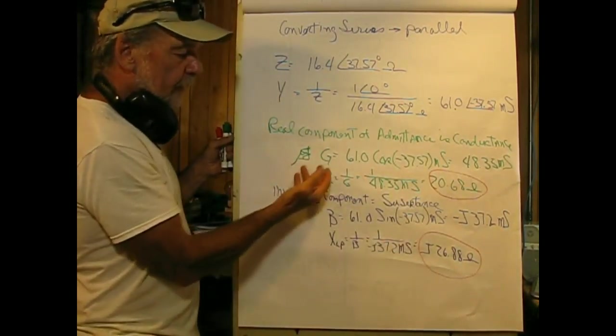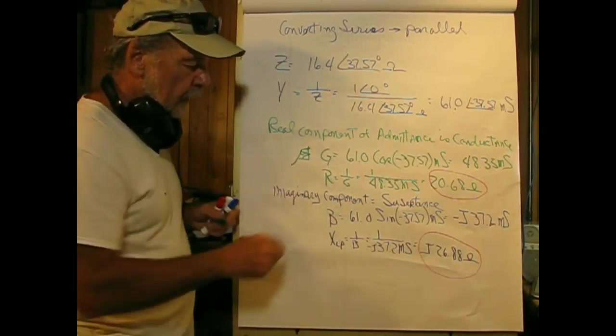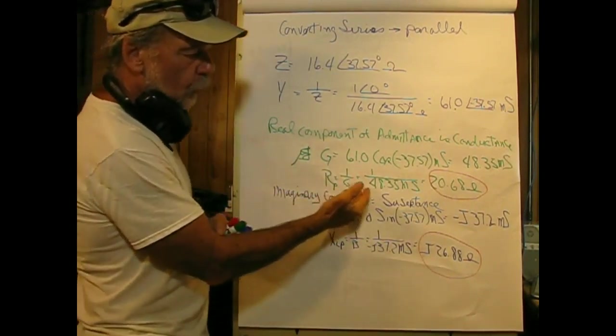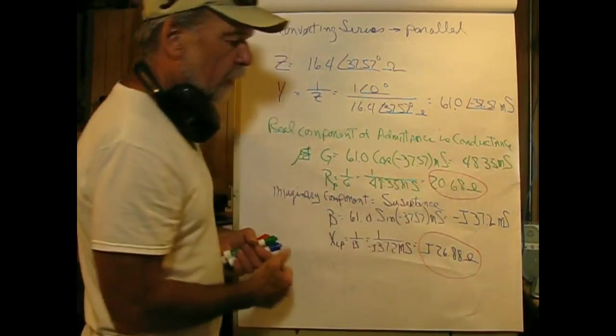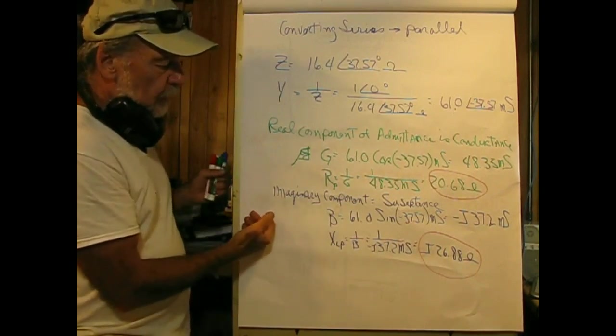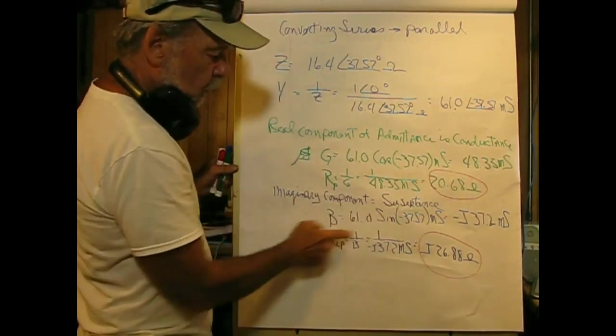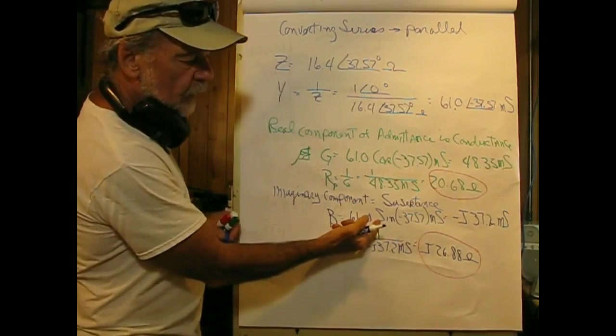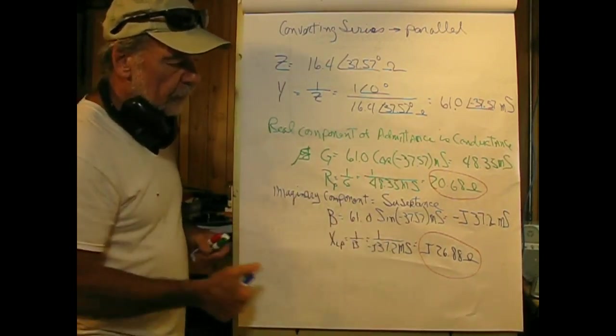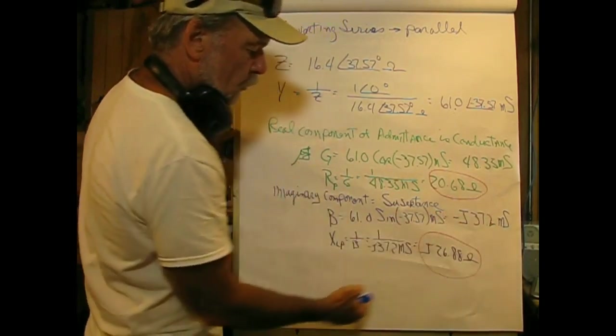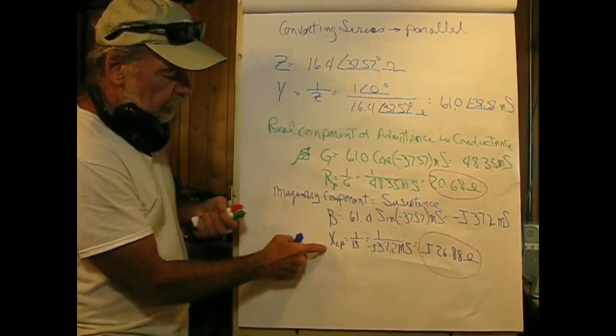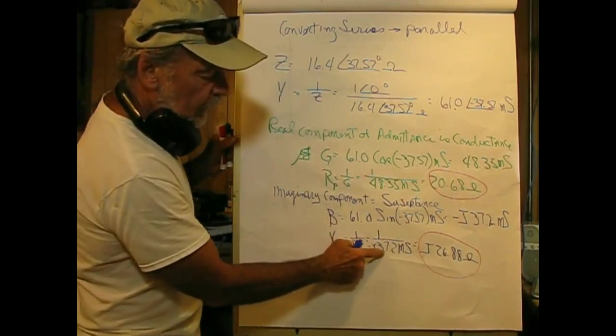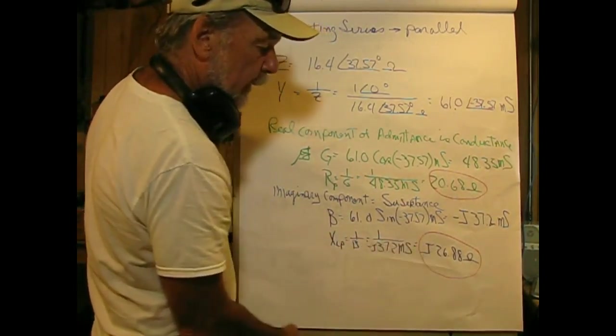Once we've got the conductance, let's get the resistance. This is going to be our parallel R, simply equal to the reciprocal of the conductance. Doing the math, that comes out to 20.68 ohms. Sound familiar? Now we need to do the imaginary part, and that's the susceptance, symbol B. The equation is the same, except now we're taking the sine operation. That gives us negative J 37.2 millisiemens. So the inductive reactance parallel is going to be the reciprocal of the susceptance, one divided by that, and it comes out to J 26.88 ohms.